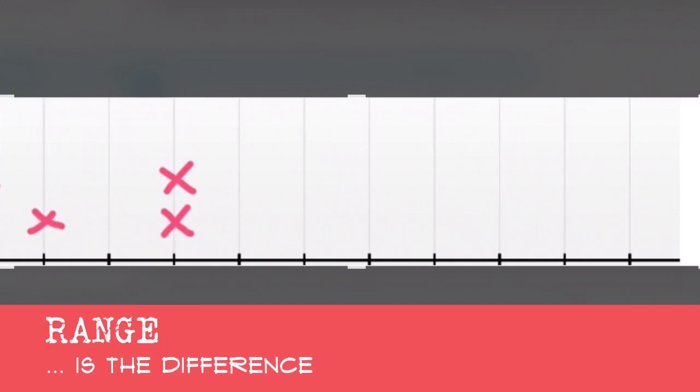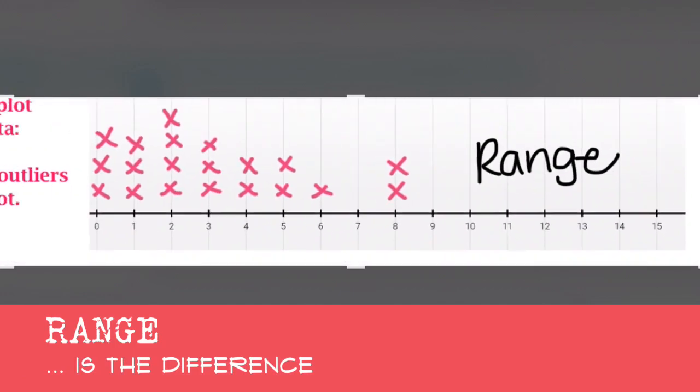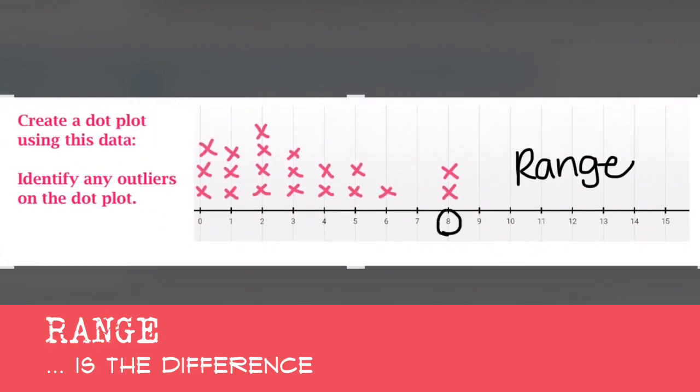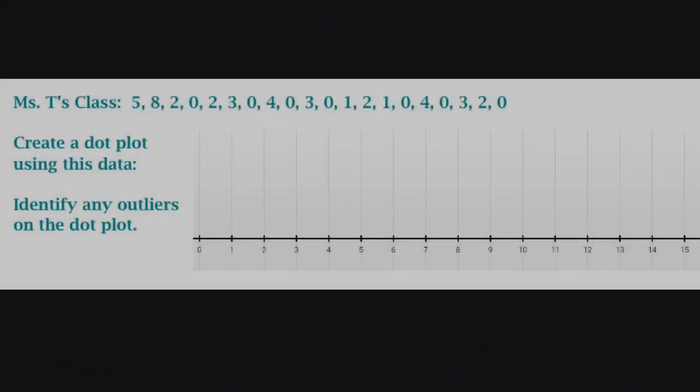Next, we're going to find the range. Let's remember that the range is the difference. We're looking at the largest data point and the smallest data point. In this case, we're going from 0 to 8, so it gives us a range of 8.